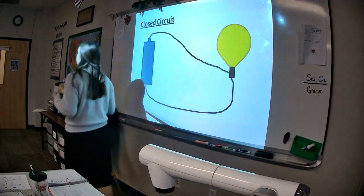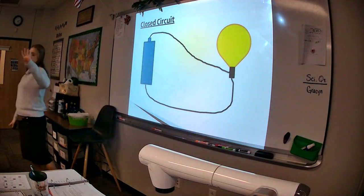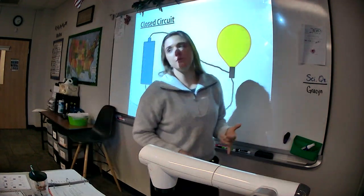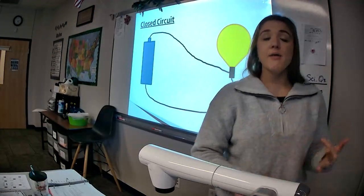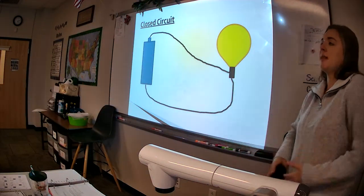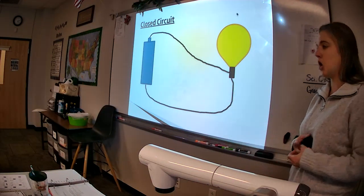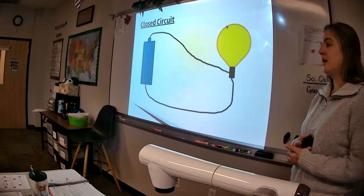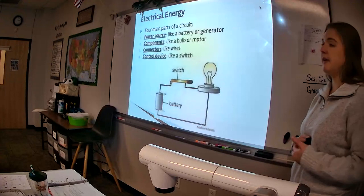So, in circuits in general, there are four parts to it. What do we call the part that actually generates the power? Usually a generator or a battery, something that creates the electricity. It starts it up, like the engine. What is that part called? Sophie? The power source. Very good.